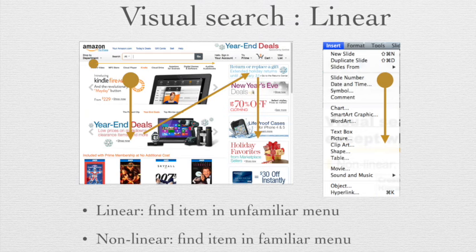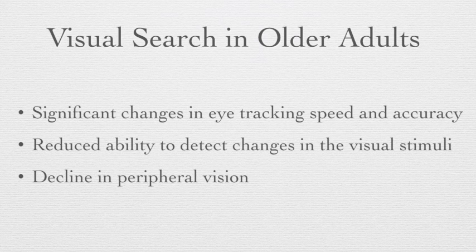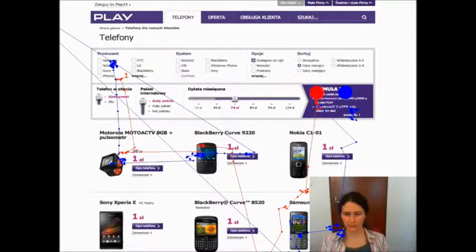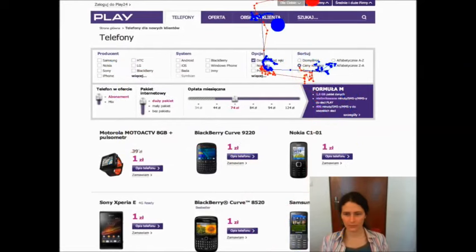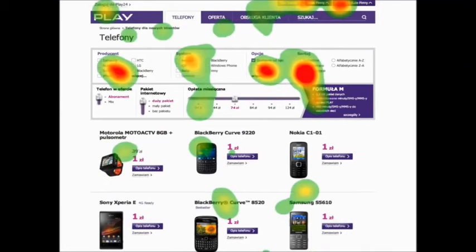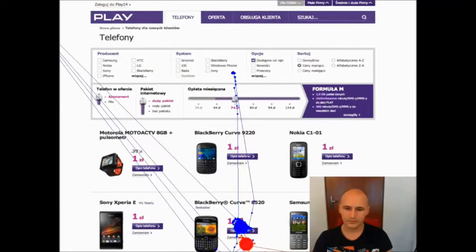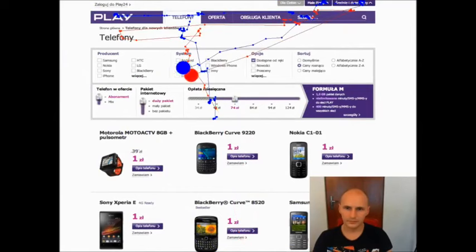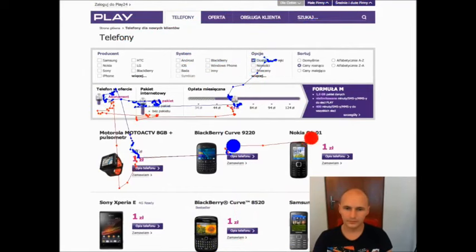For visual search, when users encounter an unfamiliar menu, it will be a linear search — from top to bottom, left to right. For familiar menus, it will be a non-linear search. Visual search in older adults shows significant changes in eye tracking speed and accuracy, as well as a reduced ability to detect changes in visual stimuli and decline in peripheral vision. This is an example of an eye tracking tool — you can see the left and right eye, and with this tool you can measure gaze time and duration.